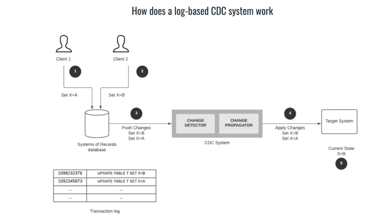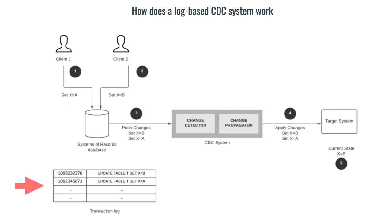Let's explore how a transaction-log-based CDC system works. Client 1 makes a change in the source database by setting X to A, then client 2 makes another change by setting X to B. The transaction log acts as an audit log and records these two operations in the order they occur. The change detector module detects changes in the transaction log and propagates them to downstream applications, which replay the changes in order. At the end, the value of X at the target system equals B.